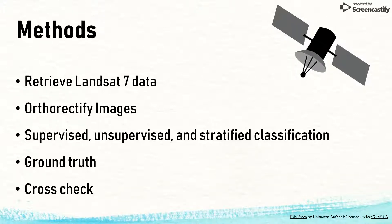The researchers also performed ground truthing to confirm their analysis. In other words, they visited specific sites in the park to verify their interpretation of the Landsat data. They then used the ground observation data along with other land cover datasets to cross-check their classified Landsat data.